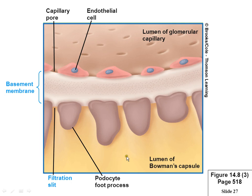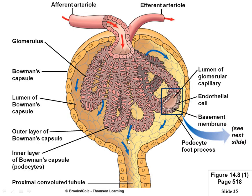Once something filters through, what area is it in? It's in Bowman's capsule. What's the F word for the name of this substance? Filtrate. It's pre-urine — it's not technically urine yet. It has a yellowish color because basically it's filtered plasma, similar in color to plasma.